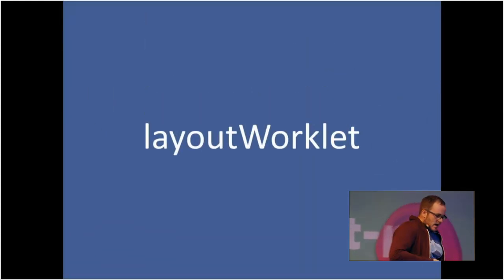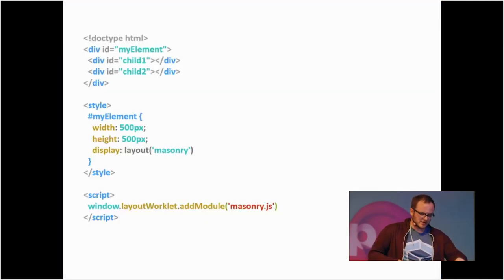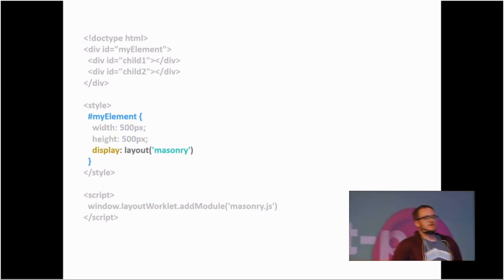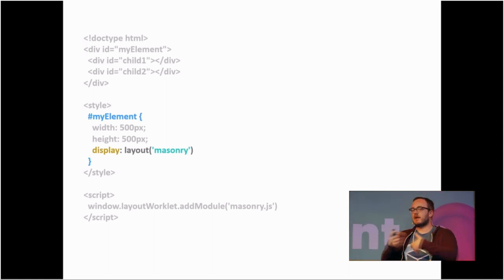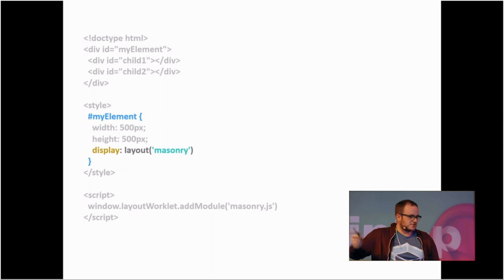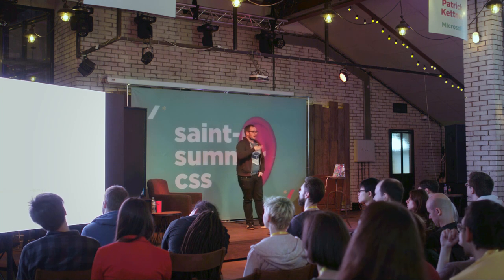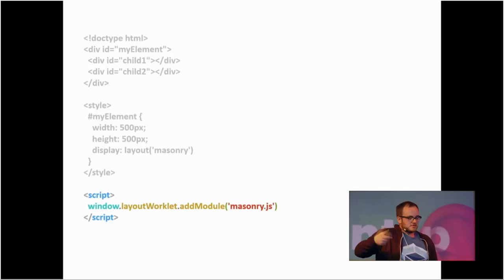The first worklet is Layout. It's officially called the CSS Layout API. You have a basic document where you set up an element and some children with CSS width, height, and normal stuff. But you also have this new display property and a function called layout. This is how you use any created CSS layouts defined within your Houdini code — you put a string inside that layout function, and that hooks into the layout worklet. You then call layoutWorklet.addModule('masonry.js').